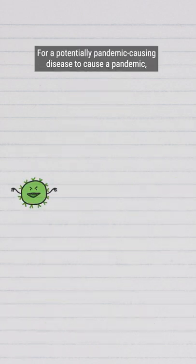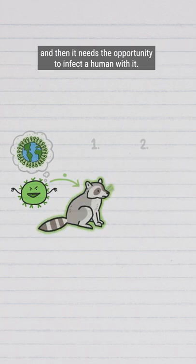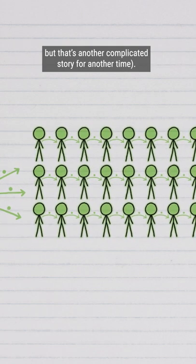For a potentially pandemic-causing disease to cause a pandemic, two things need to happen. An animal needs to be infected with the disease and then needs the opportunity to infect a human with it. The human also needs to actually get infected and spread the infection to others.